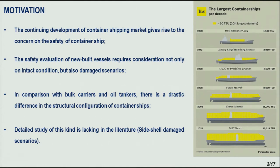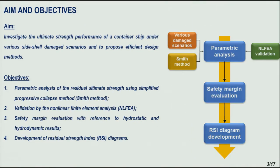There are plenty of works in the literature investigating the residual ultimate strength of a ship, but most of them were completed for bulk carriers and oil tankers. As we all know, there is a very large difference in structural configuration between these ship types. Recently, there has been some research investigating the residual strength of a grounded container ship, but very little on the residual strength of a container ship having side shell damage. With this motivation, the aim of our study is to investigate the ultimate strength performance of a container ship under different side shell damage scenarios, and also to propose efficient design methods for a quick assessment of the residual strength.